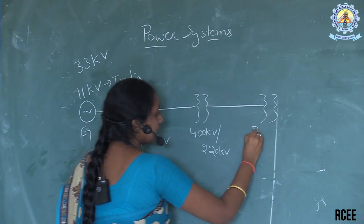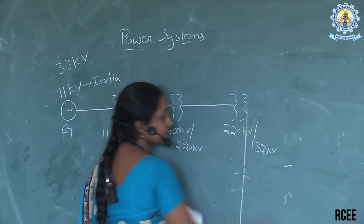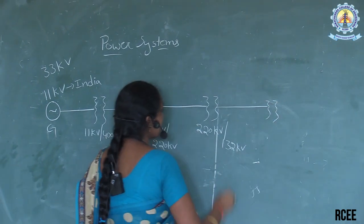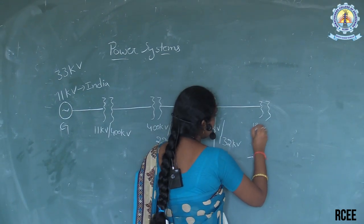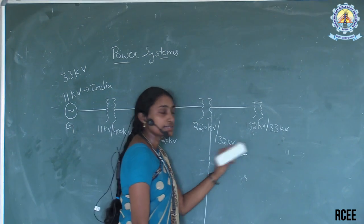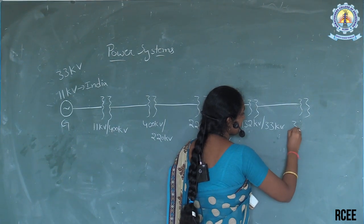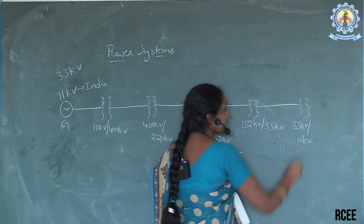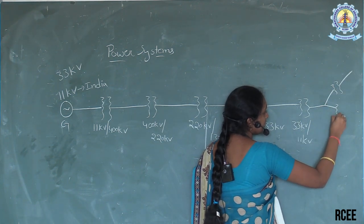And 220 kV is stepped down to 132 kV. Again, this 132 kV is stepped down to 33 kV. Again, this 33 kV is stepped down to 11 kV. This 11 kV is then spread to different distributors and different consumer ends.